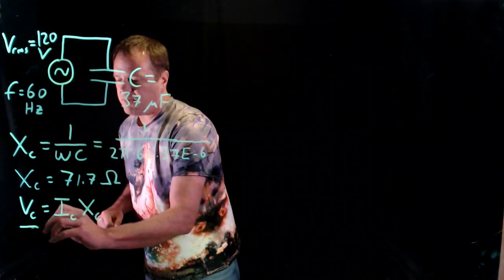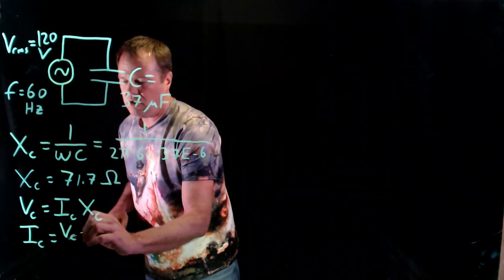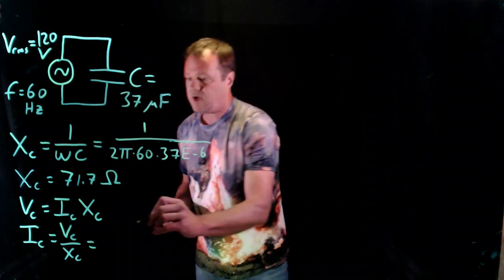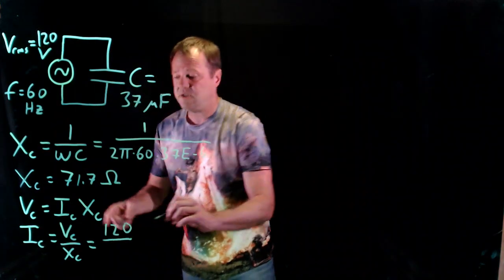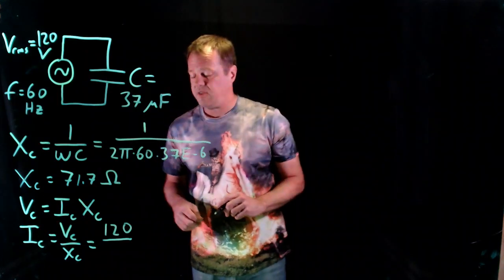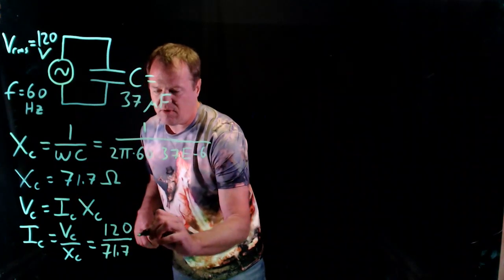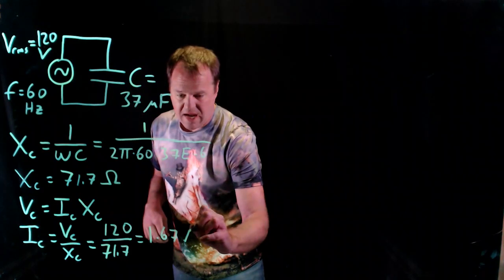And so if I'm going to predict the current, I just take the voltage over the capacitive reactance, throw in those numbers. So I've got 120 volts. By the way, that's 120 volts RMS, and so I'm also calculating the RMS current. You've got to be careful about that. So the capacitive reactance is 71.7, and I get 1.67 amperes.